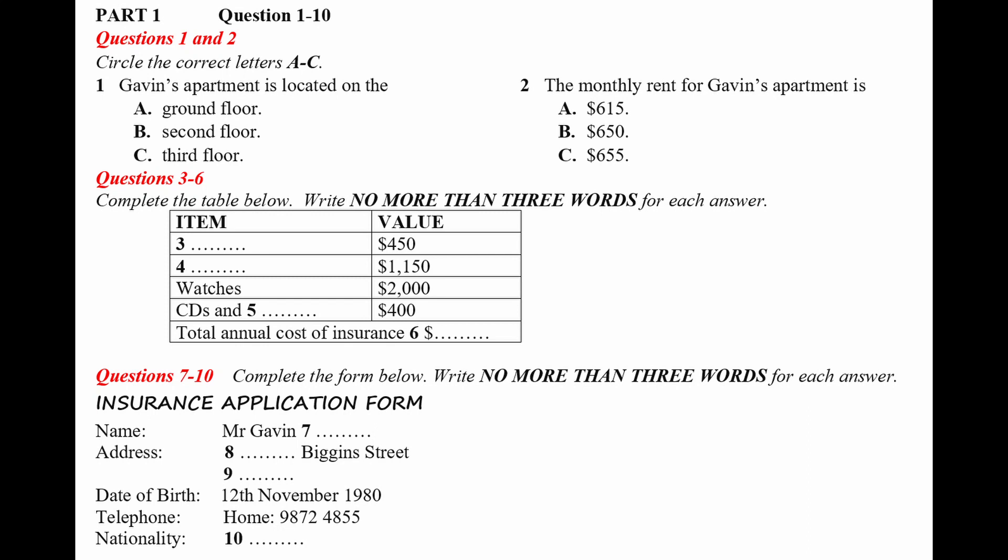And the stereo system cost $1,150. Have you got a television? Yes, but it's very old and not worth much. OK. Well, is there anything else you want to insure? Yes. I've got a couple of watches and my CDs and books. How much do you think they're worth? The watches are worth $1,000. For both of them? No, each one. And altogether, the CDs and books cost me about $400.